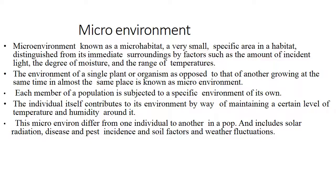Micro-environment is known as a micro-habitat — a very small, specific area in a habitat distinguished from its immediate surroundings by factors such as the amount of incident light, degree of moisture and the range of temperatures. It is the environment of a single plant or organism as opposed to another growing at the same time in almost the same place. Each member of a population is subjected to a specific environment of its own. The individual itself contributes to its environment by maintaining a certain level of temperature and humidity around it. This micro-environment differs from one individual to another in a population and includes solar radiation, disease, pest incidence and soil vector factors, along with weather fluctuations.